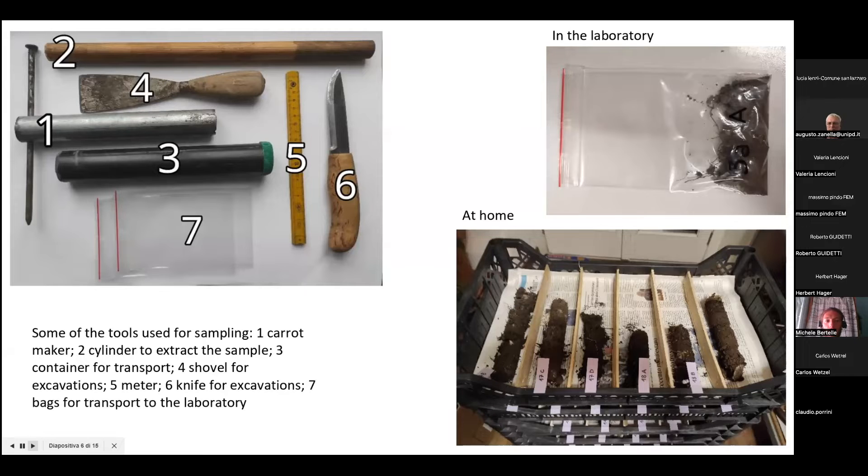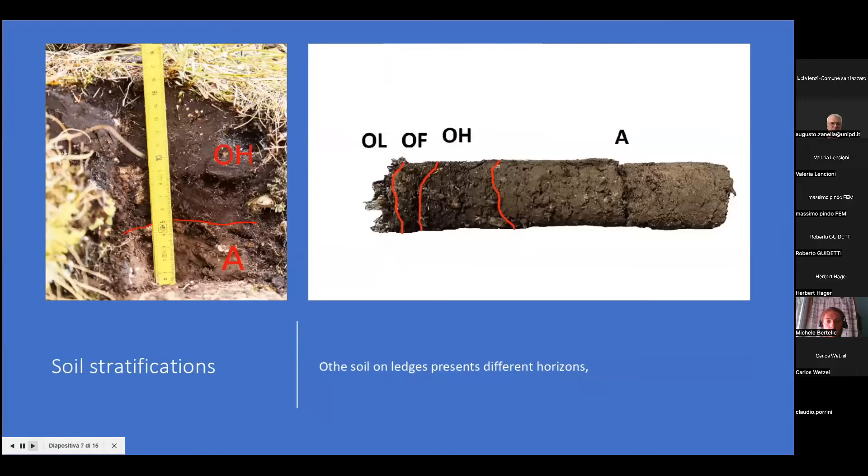Here is an example of the stratification of the soil on a ledge. Ledges are just little areas different from the others because they're isolated from the other environments.